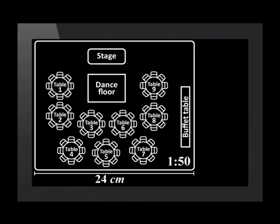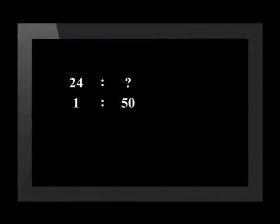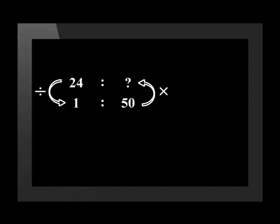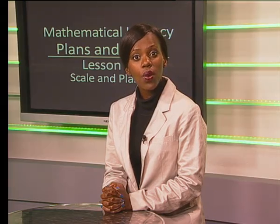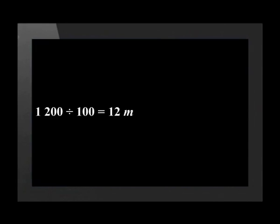Let's use this method again. If the plan measures 24 centimetres across the width, what is the width in real life? First we write down the ratio we need to find, then we write the given scale underneath. We draw in two arrows — the down arrow shows divide and the up arrow tells us to multiply. 24 divided by 1 equals 24, and 24 multiplied by 50 equals 1200 centimetres. The width of the hall is 1200 centimetres. Let's change this to metres: 1200 divided by 100 gives us 12 metres.